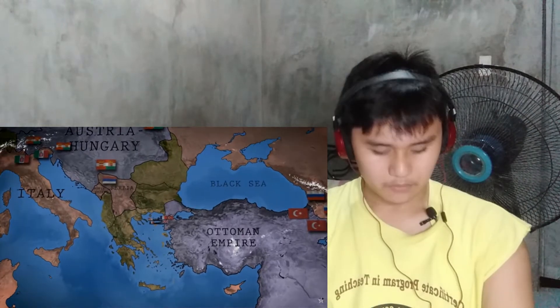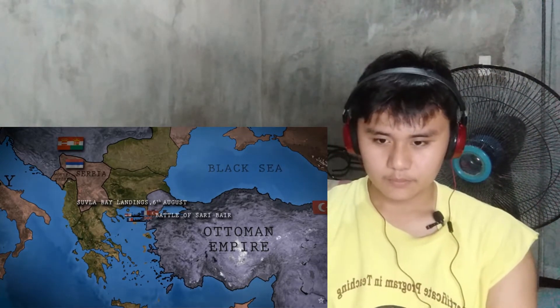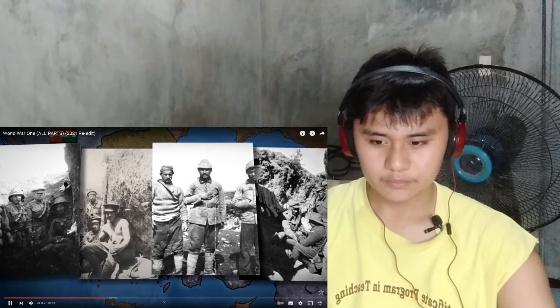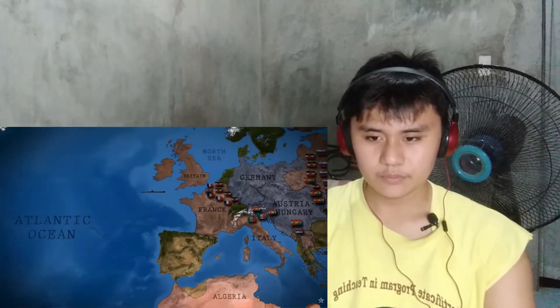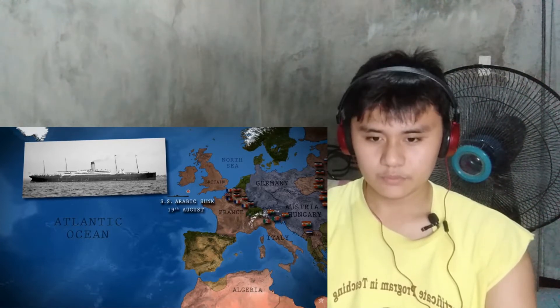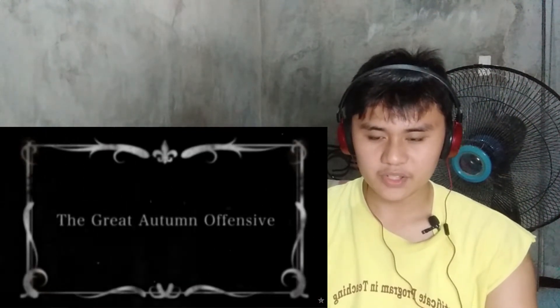At Gallipoli, the Allies land reinforcements at Suvla Bay, but neither they nor a series of fresh attacks by the ANZACs can break the deadlock. Conditions for both sides are terrible — troops tormented not only by the enemy but by heat, flies, and sickness. In the Atlantic, a German U-boat sinks the liner SS Arabic — 44 are lost including three Americans. In response to further US warnings, Germany ends all attacks on passenger ships.